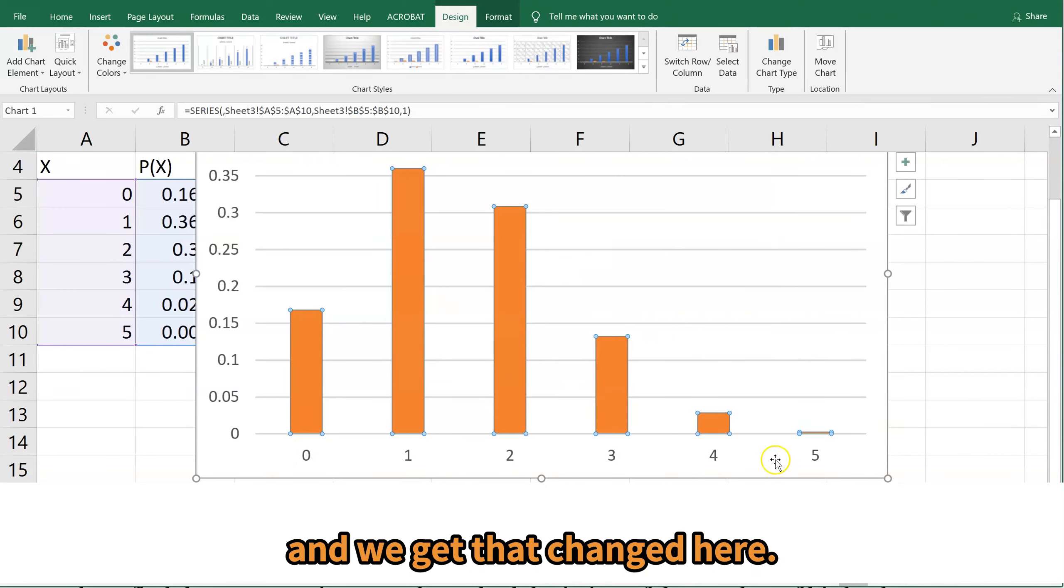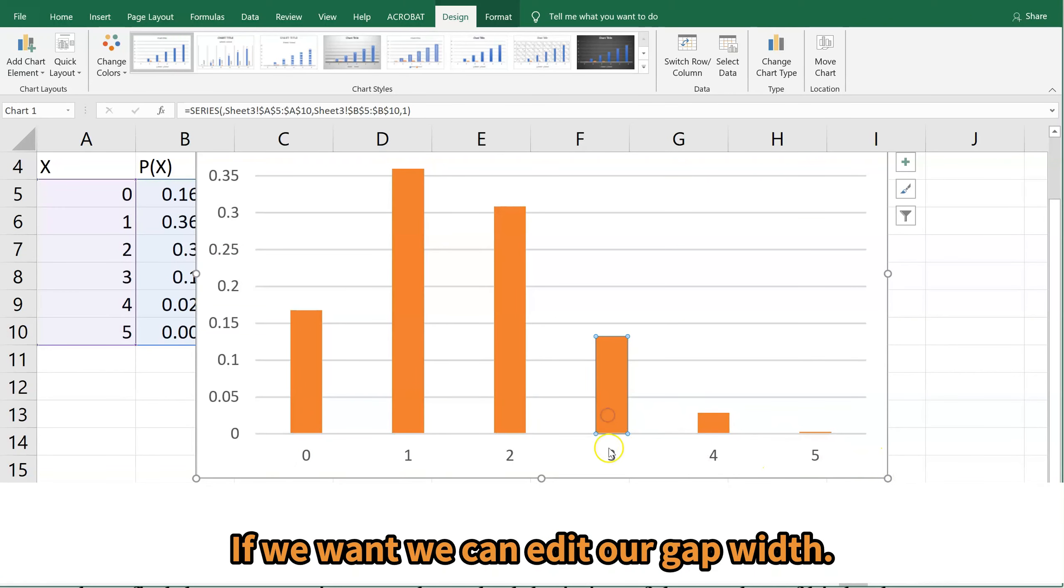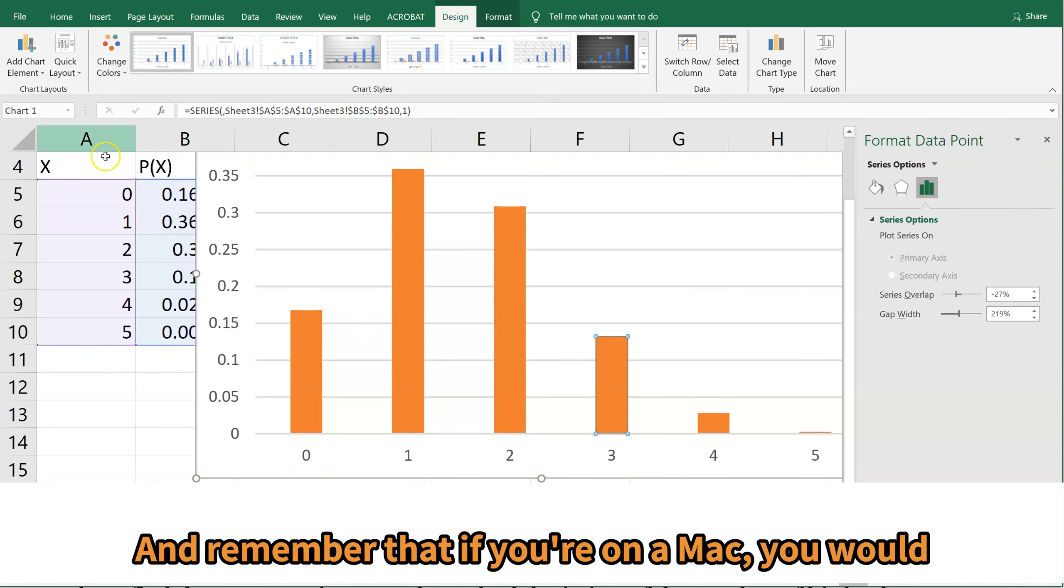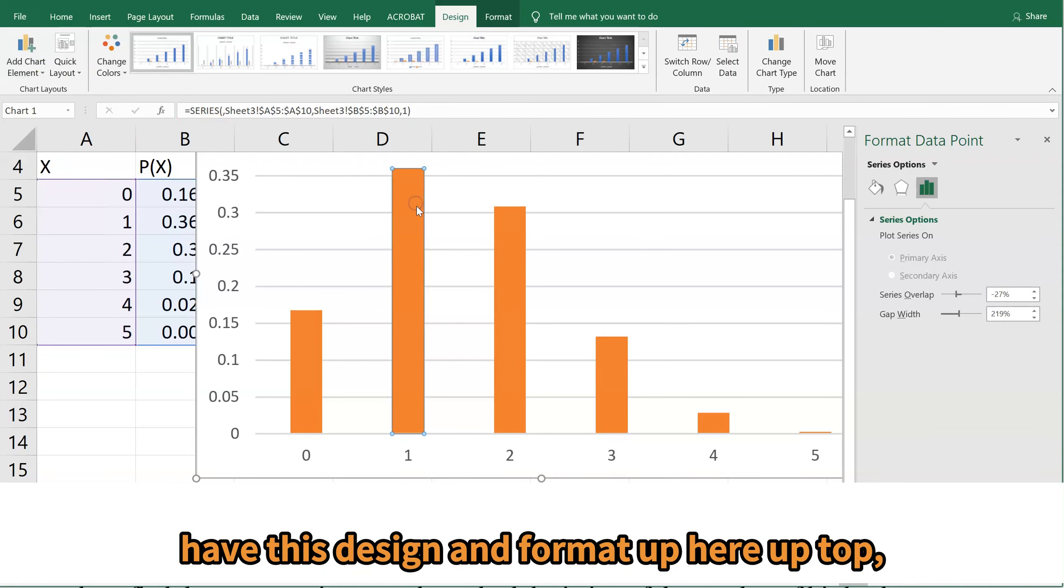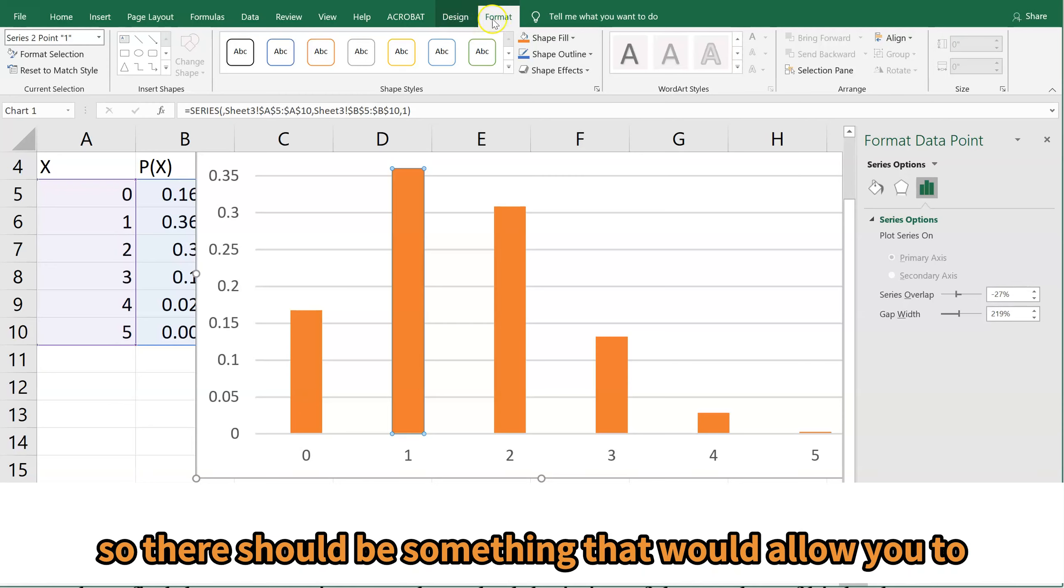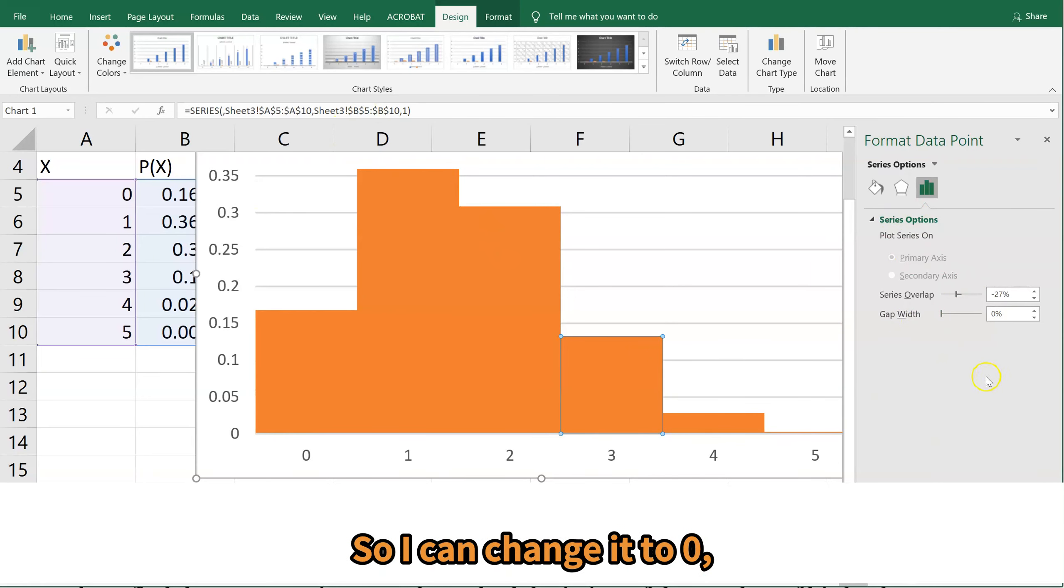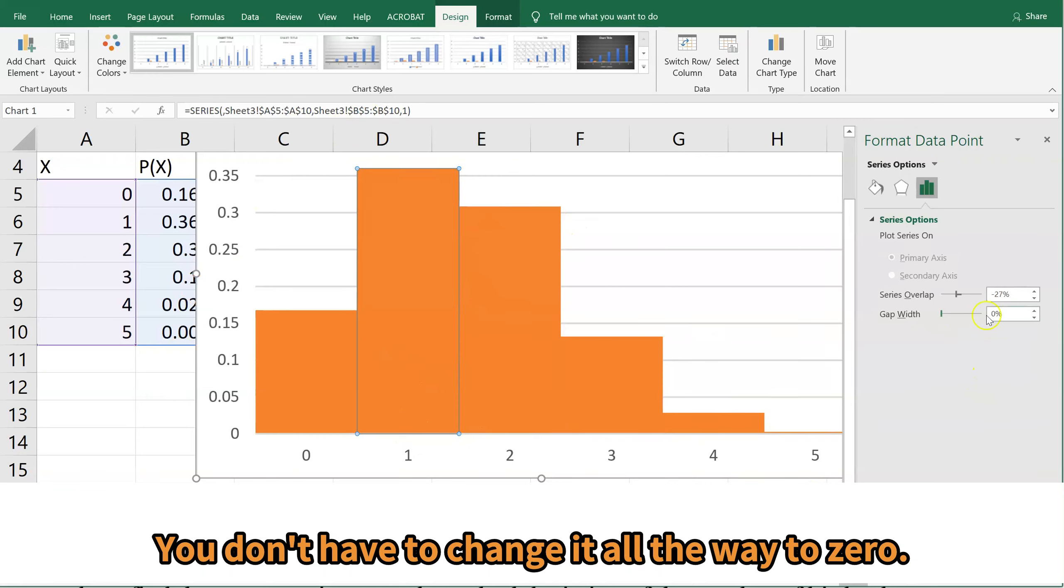Okay, and we get that change here. If we want, we can edit our gap width. And remember that if you're on a Mac, you would have this design and format up here, up top. So there should be something that would allow you to format your data point and change the gap width. So I can change it to zero and I get this nice histogram. You don't have to change it all the way to zero. They can be bars that don't touch for a discrete binomial distribution.